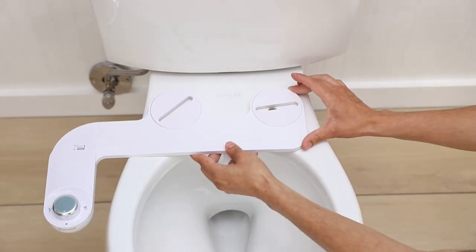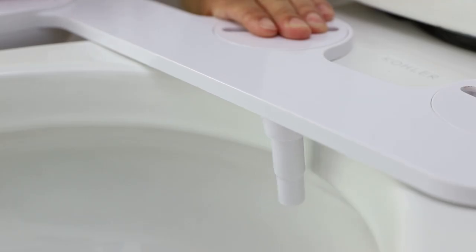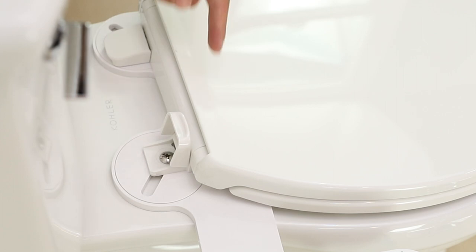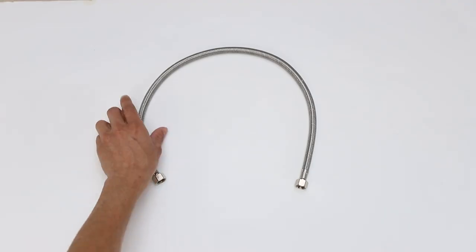Place the bidet attachment on the toilet with the nozzle close to the back of the toilet, leaving a slight gap between the toilet and the nozzles. Place the toilet seat back on your toilet. Adjust your bidet attachment and tighten your toilet seat in place.